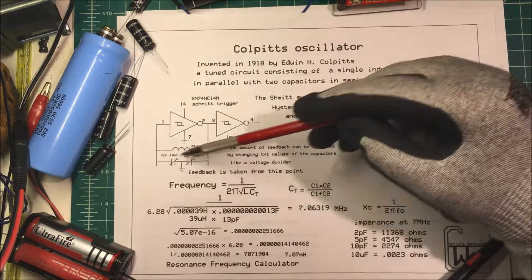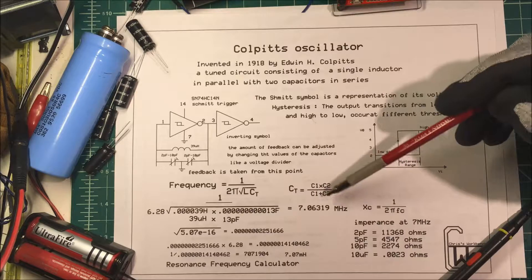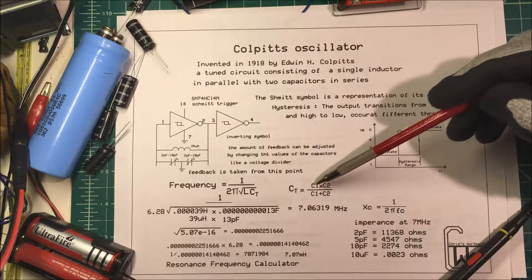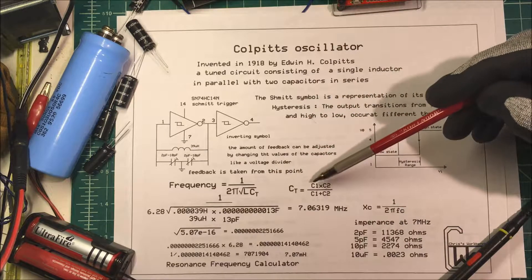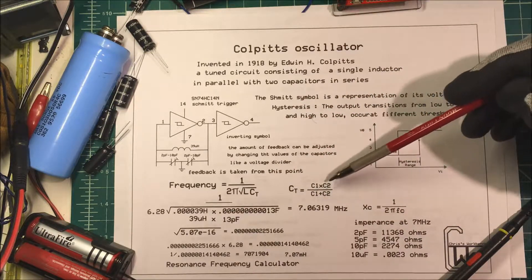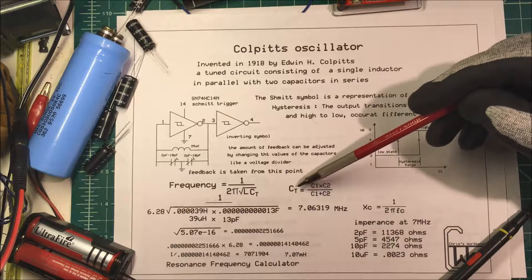Now since these capacitors are in series we need to use this formula for series capacitance. If these happen to be 10 picofarads each then 10 times 10 is 100 divided by 20. So that would be a total of 5 picofarads.